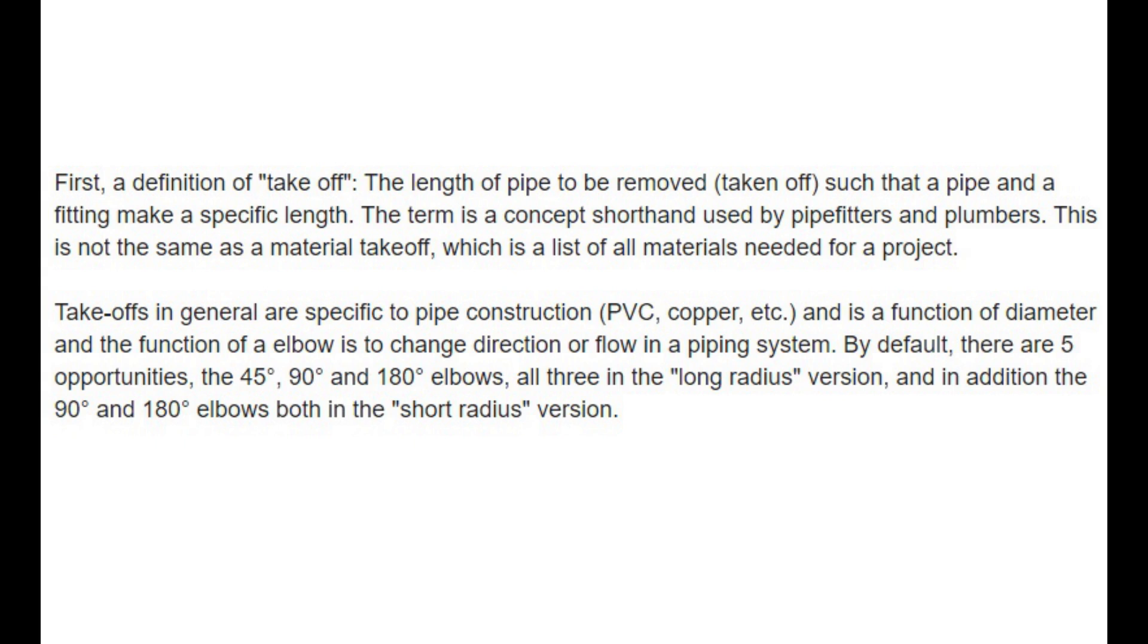Takeoffs in general are specific to pipe construction - PVC, copper, etc., and is a function of diameter. And the function of an elbow is to change direction or flow in a piping system. By default, there are 5 opportunities: the 45 degrees, 90 degrees and 180 degrees elbows, all 3 in the long radius version, and in addition the 90 degrees and 180 degrees elbows both in the short radius version.